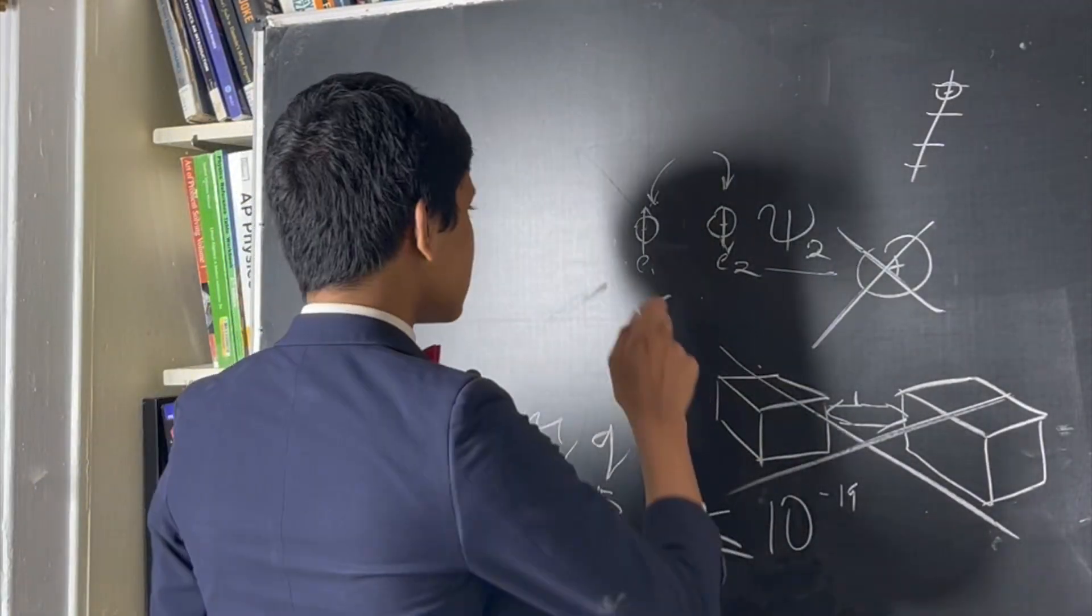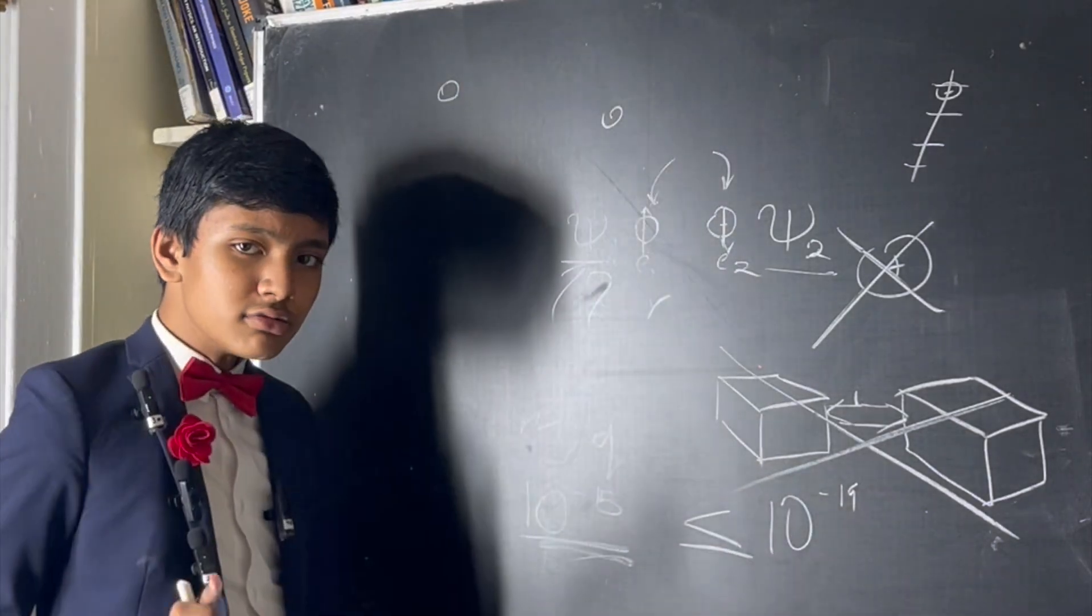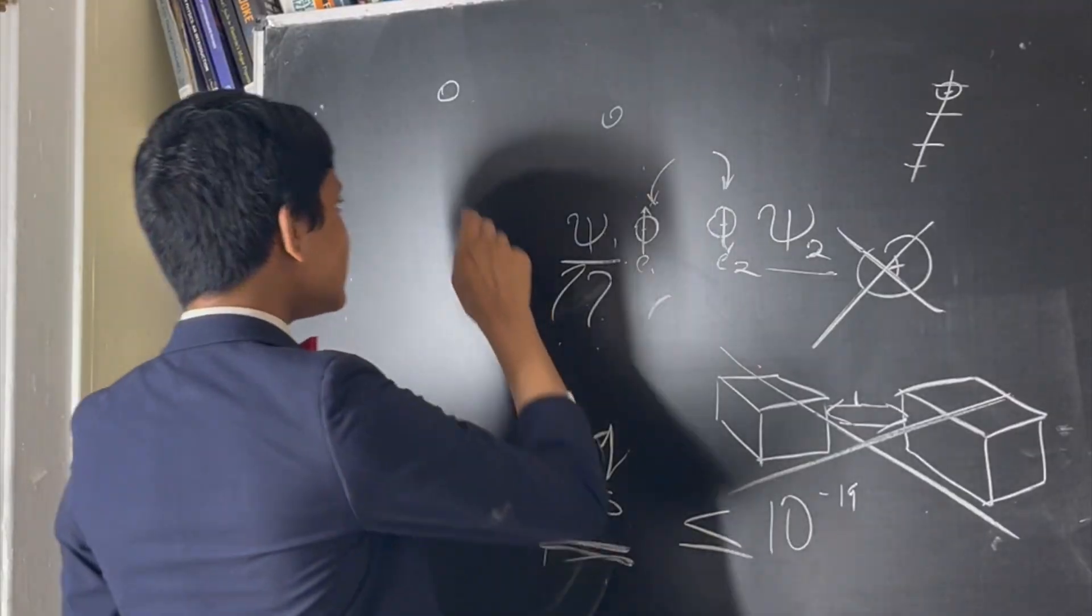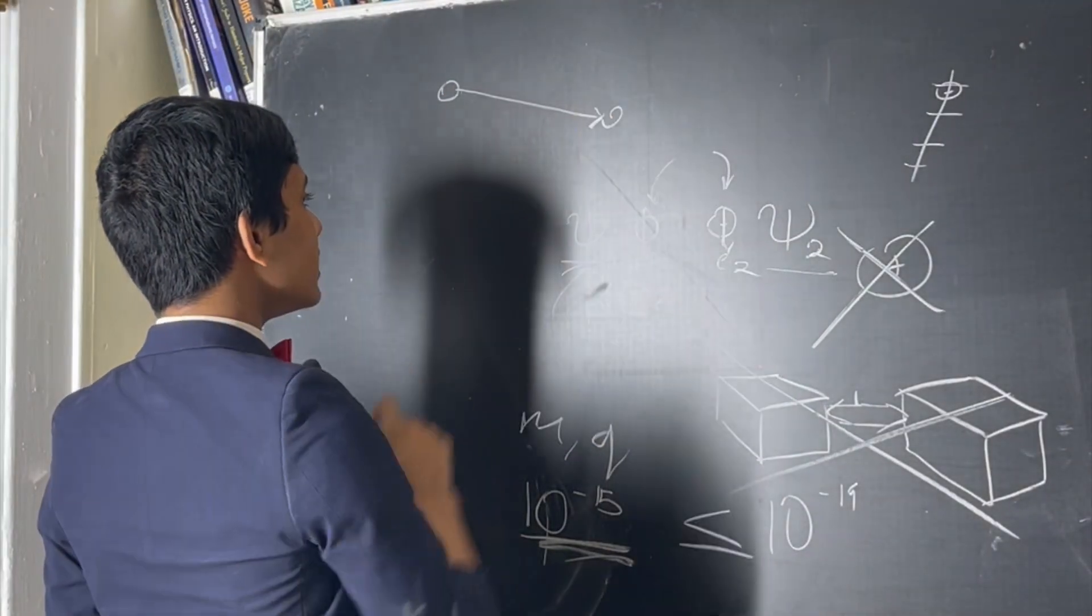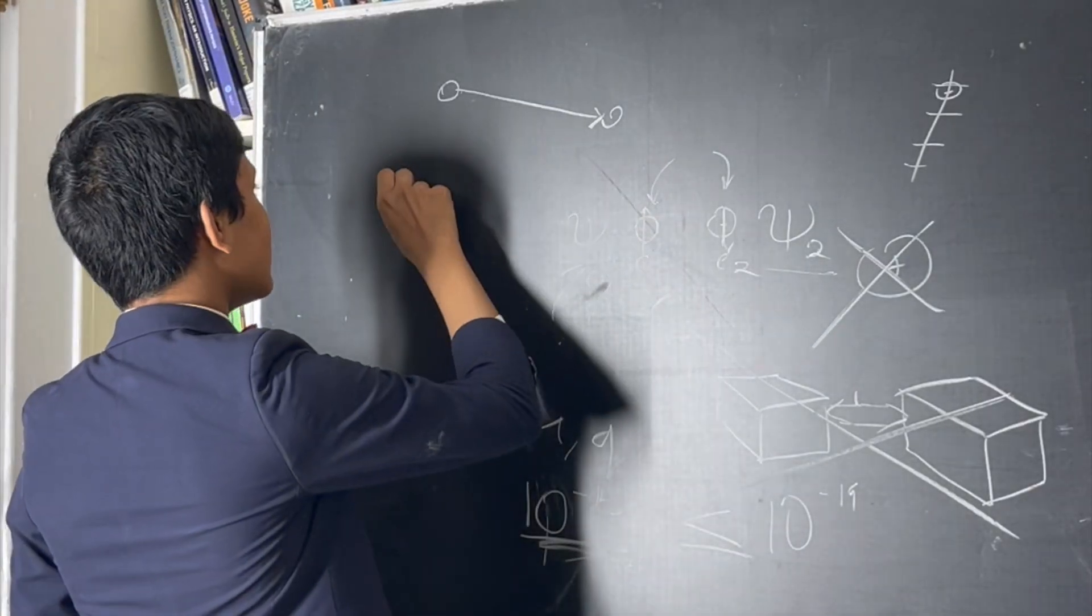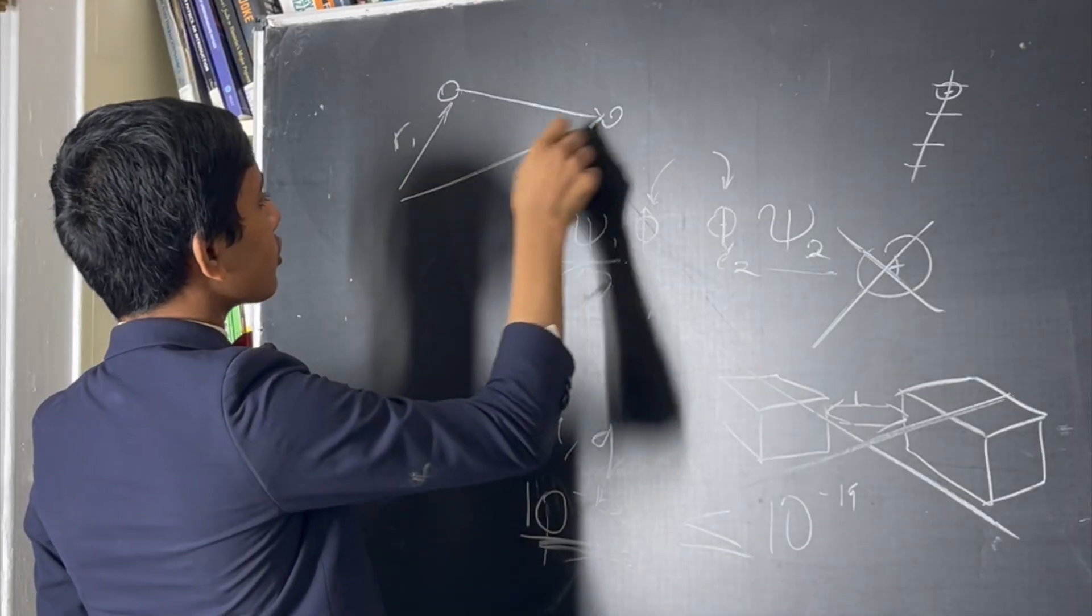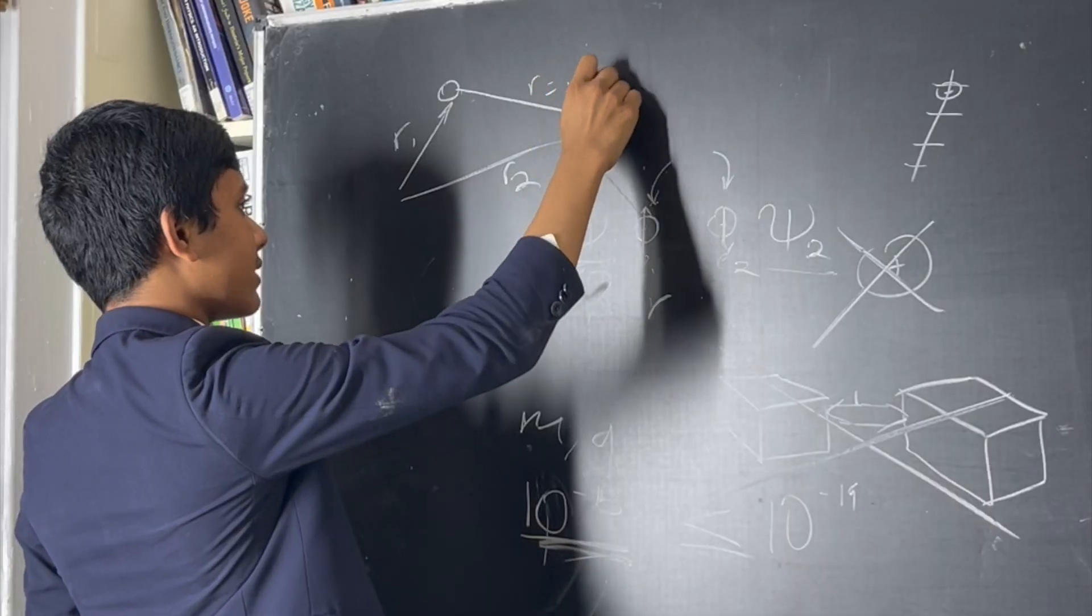One thing that we need to know is in classical mechanics, usually a system's mechanics depends only on the relative position vector. That is, if we have r1 and r2 over here, the system usually only depends on r over there.